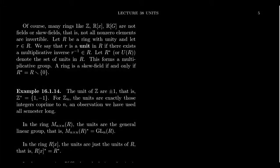In previous videos of this lecture series, we introduced the idea of fields and skew fields, which are rings for which every non-zero element is invertible — it has a multiplicative inverse, or a so-called reciprocal. Not every ring we've studied is a field or even a skew field. Like the integers, the only invertible elements are plus or minus one. Most elements are not invertible. If you take a polynomial ring, even if the coefficient ring is a field, the polynomial ring itself is not going to be a field or a skew field.